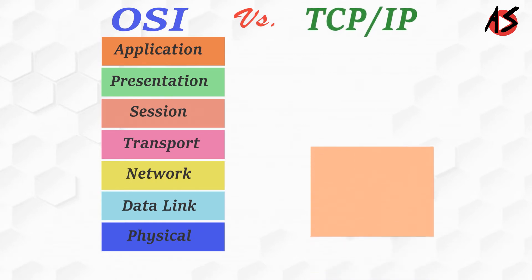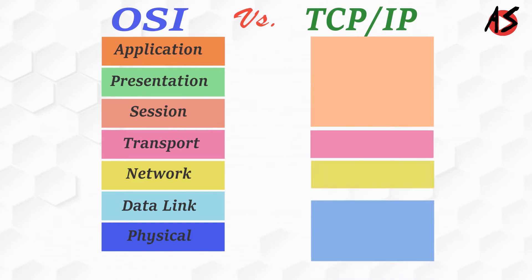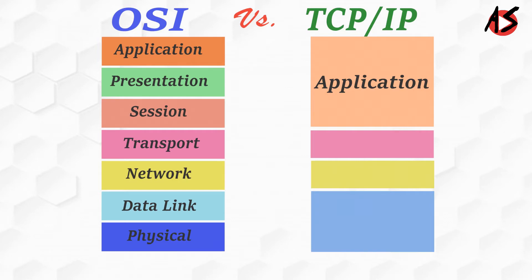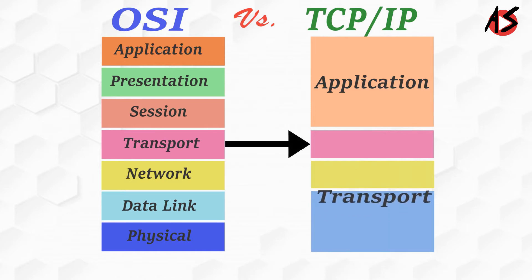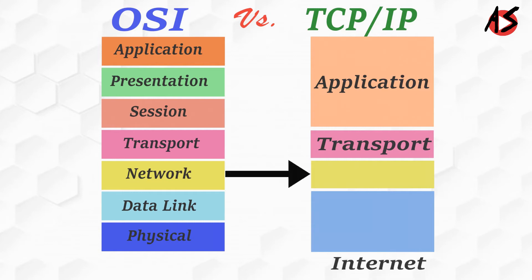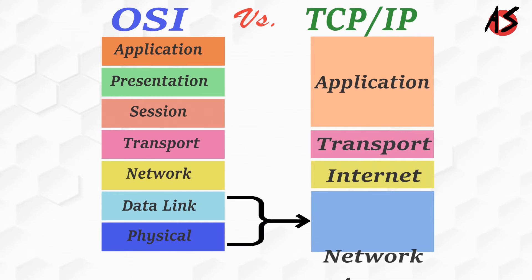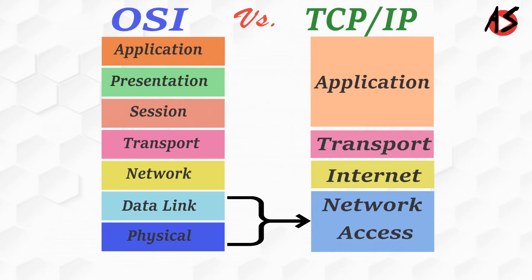So instead of 7 layers, TCP/IP consists of 4 layers. The Application layer in the TCP/IP model is a combination of Application, Presentation, and Session layers, so it also handles presentation of data and managing the session. The Transport layer is similar in both models. The Network layer in OSI is called the Internet layer in TCP/IP, while the Data Link and Physical layers combine into one layer called the Network Access layer. So let's understand the TCP/IP model in this video.